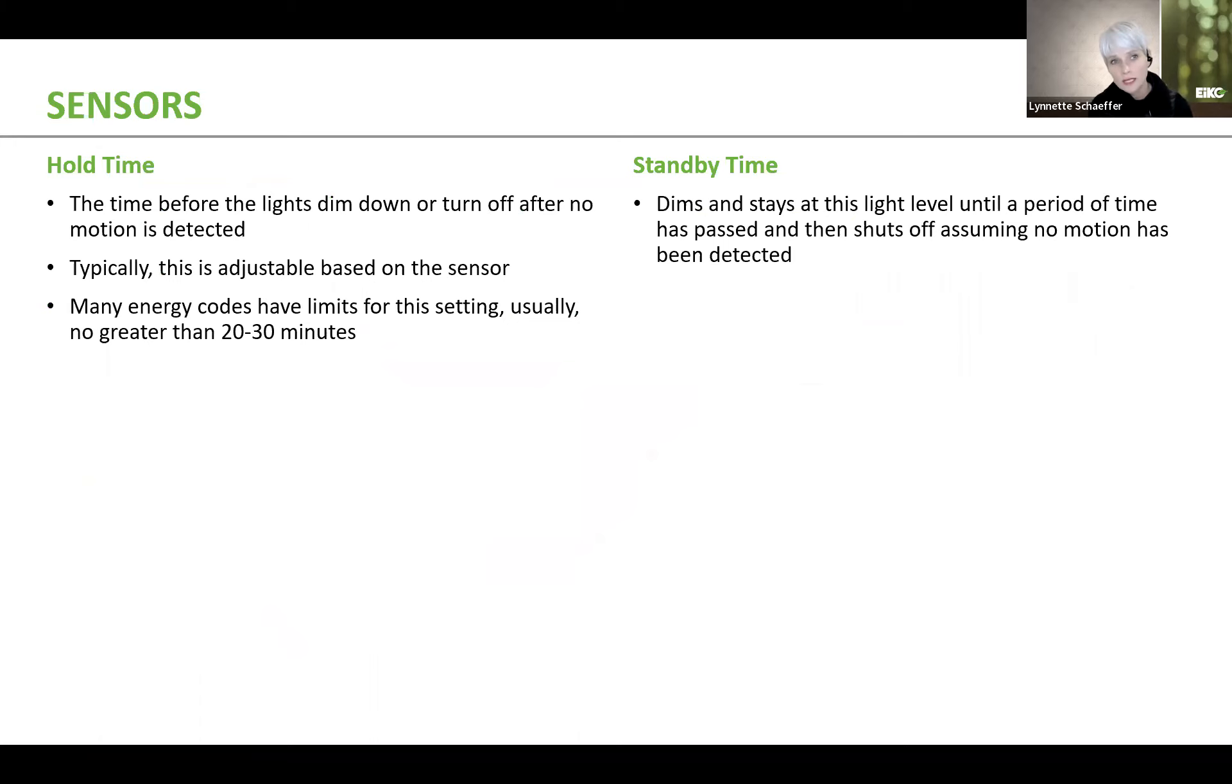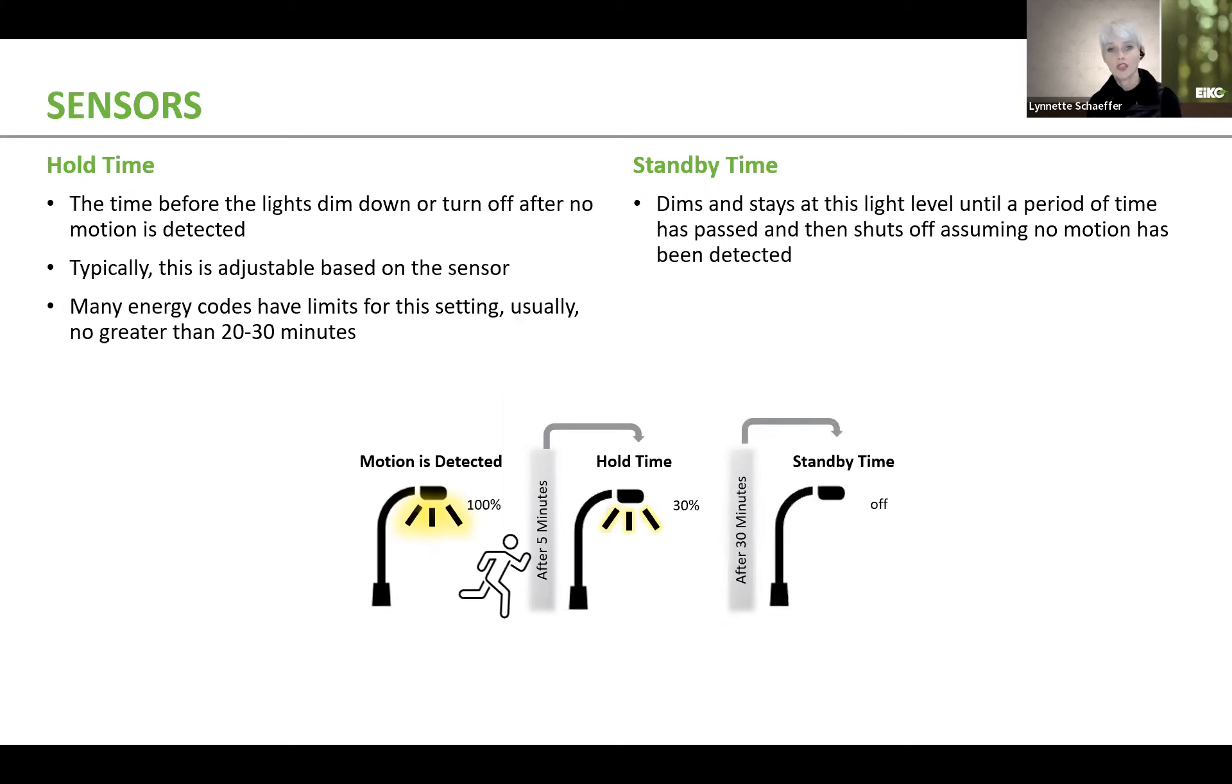Now, many sensors have a hold time, a standby time, and you also have the ability to set the sensitivity. So first of all, let's talk about hold time and standby time. So in this first animation, you are going to see the fixtures off, but when motion is detected, it goes to 100%. Of course, that can be programmed to be less than 100% if you want to, which I'll talk about here in a few minutes. Then after five minutes with no motion, that is what we refer to as the hold time. And then after that, you're going to notice that after five minutes of hold time and there's no motion, then the lights will go down to, in this example, 30% light output.